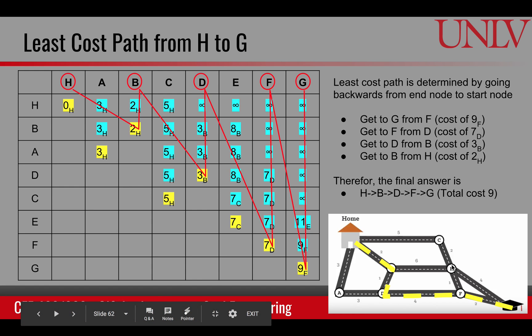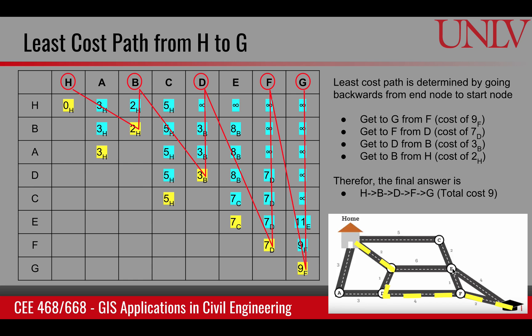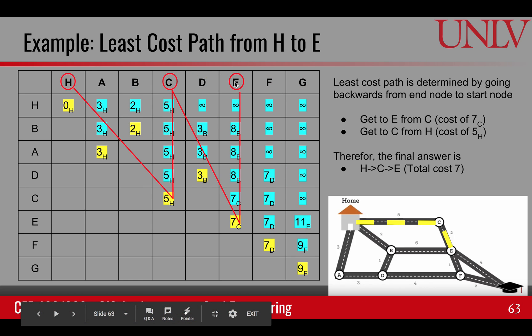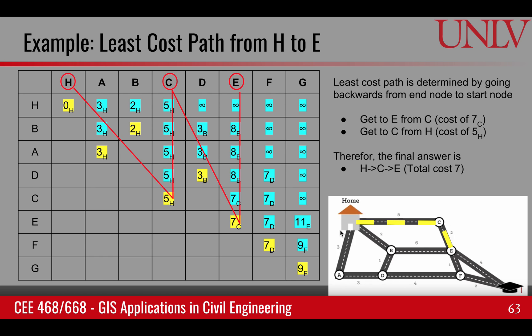Let's do another example. Suppose we are trying to get to E. To get to E, we have to come from C with 7 units. To get to C, we have to come from H with 5 units. So the least cost path to E is H to C to E. I hope this example gives you a taste of the algorithms used at the back end to find shortest or least cost paths, and in particular those used on Google Maps.